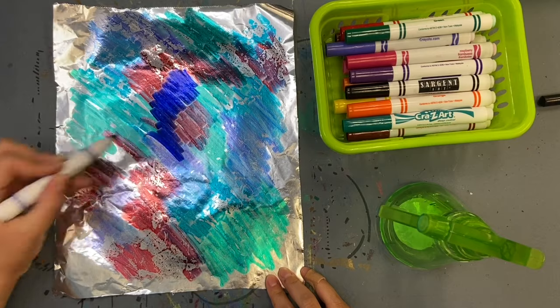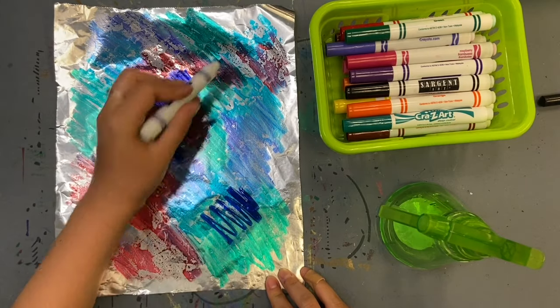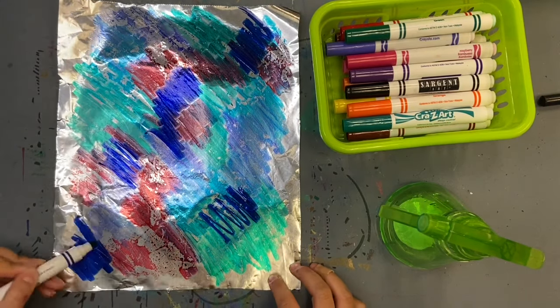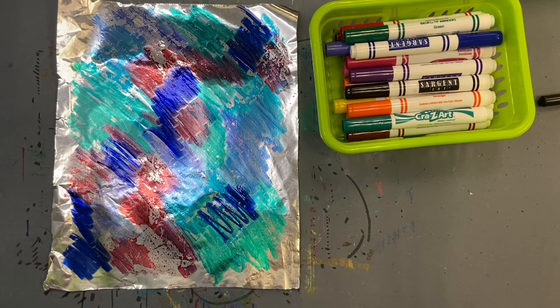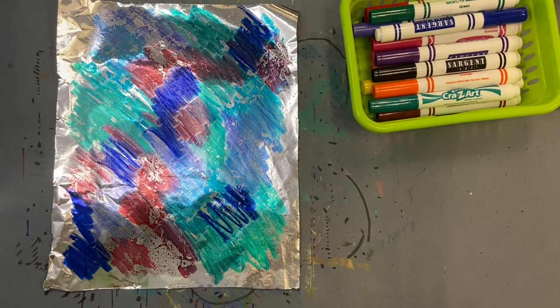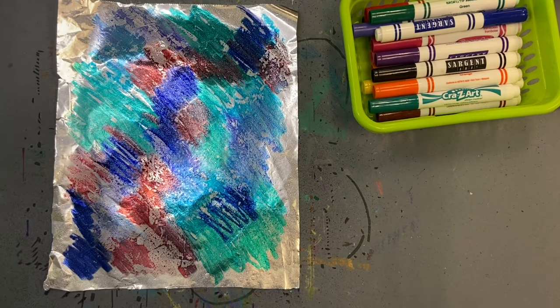In a moment, I'll show you two ways to foil print. That means we're going to take the ink that's on the foil and transfer it onto our paper. The first way is to spray the foil with water to wet the markers.